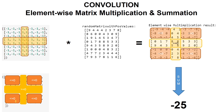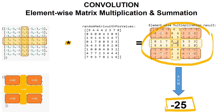In the first video, we talked about how to use positive and negative numbers to sum them up and compare with a threshold to decide if the plus sign exists or not. In the second way, remember that not only can we sum the positive and negative numbers, but we can sum all the numbers. As you see, after element-wise matrix multiplication, we end up with minus 25.